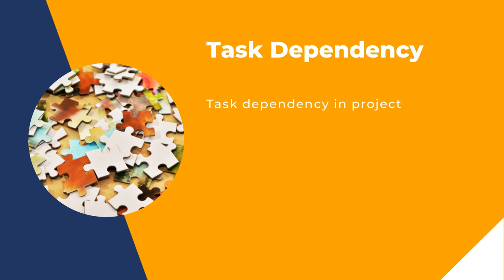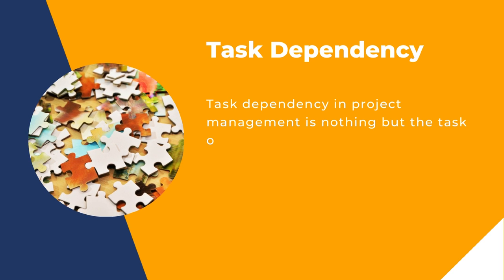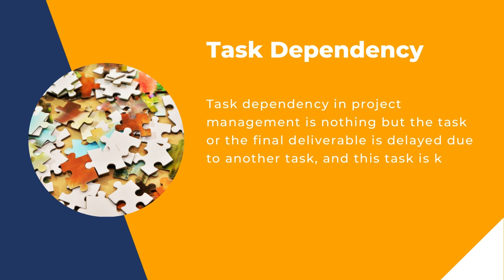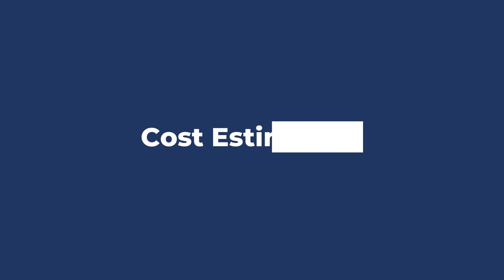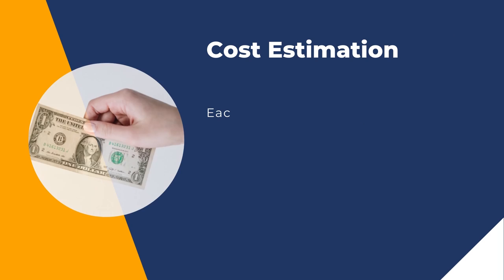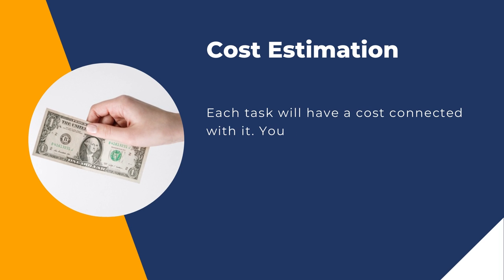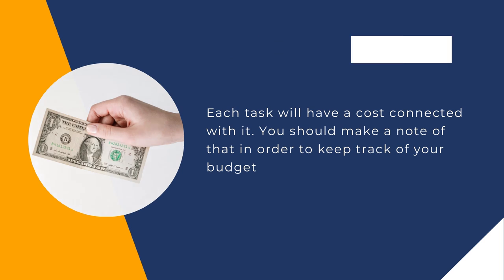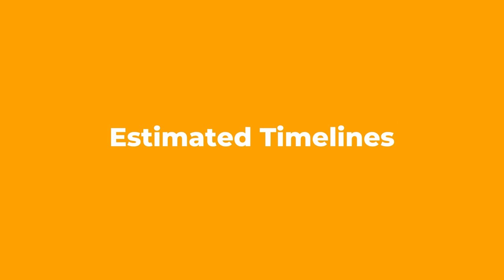Task Dependency in project management refers to when a task or the final deliverable is delayed due to another task — that task is known as the dependency task. In simple terms, if a task is dependent on the status of other tasks, it is known as task dependency. Cost of Task: each task will have a cost connected with it, and you should make a note of that in order to keep track of your budget.